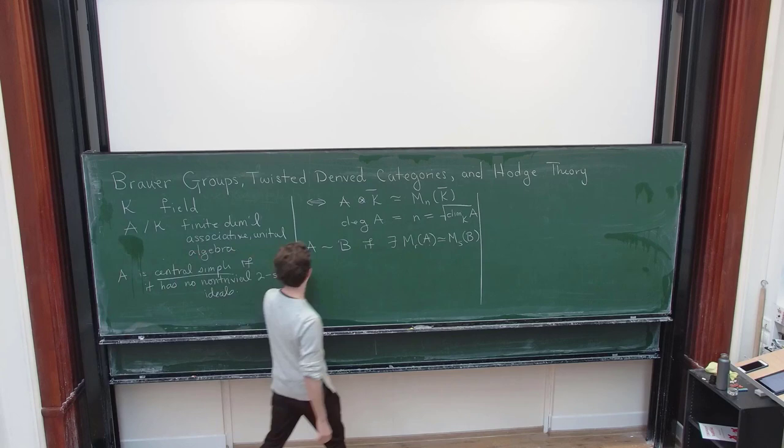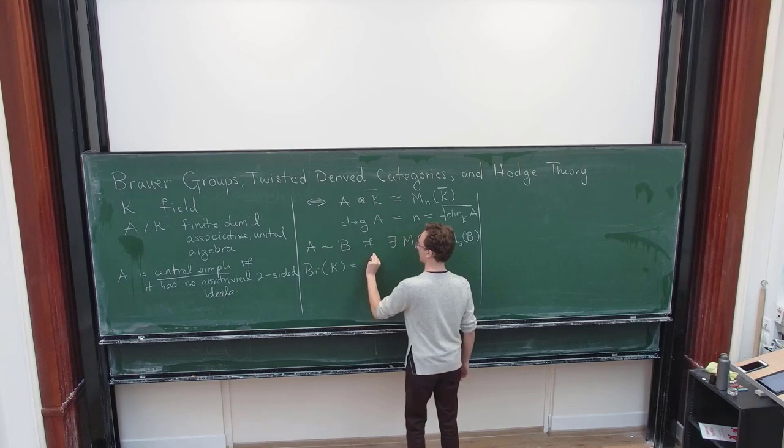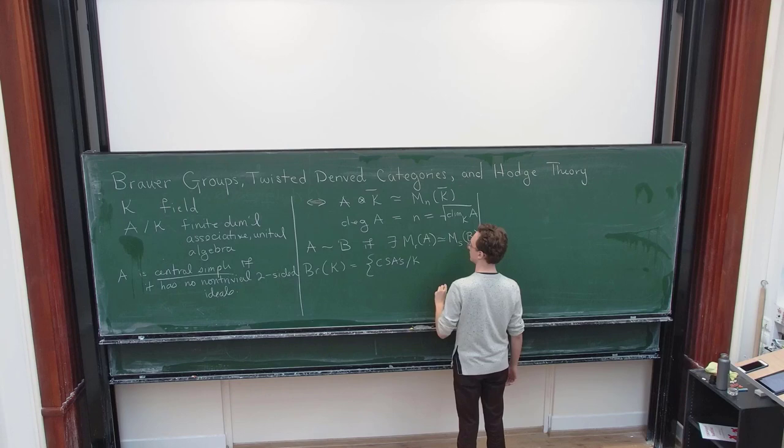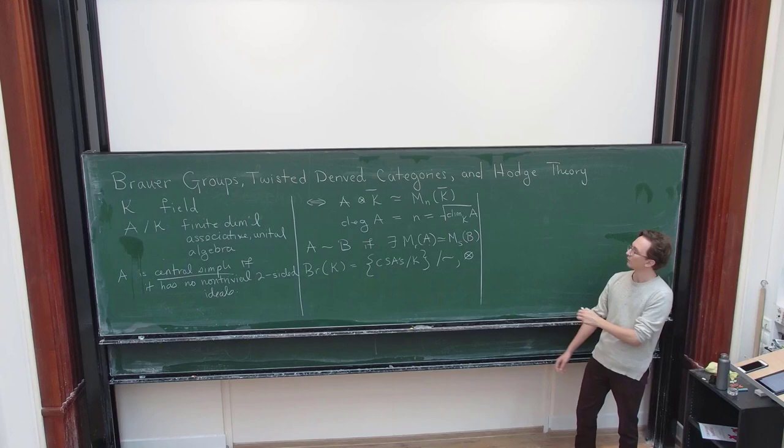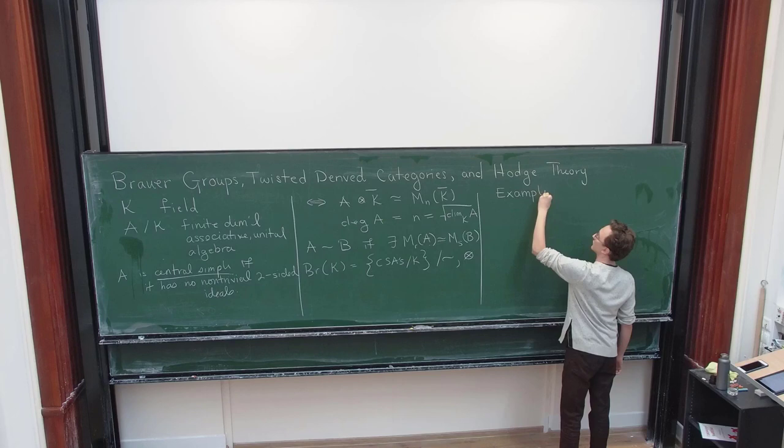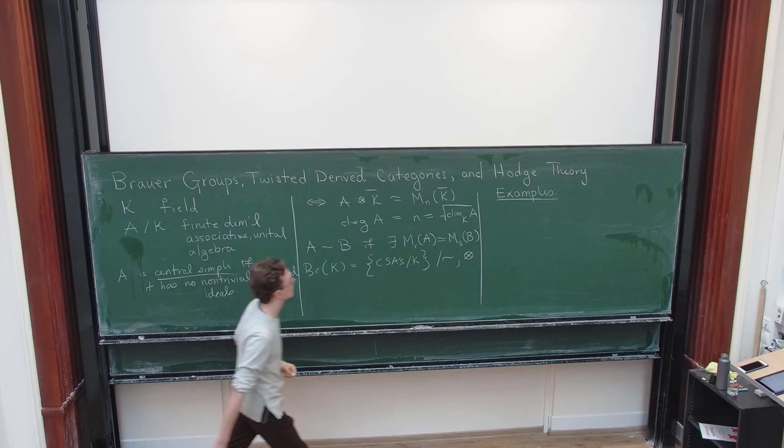And the Brouwer group is simply the set of central simple algebras modulo equivalence relation equipped with the tensor product. So let me, I should convince you that this is not like a trivial notion.